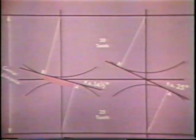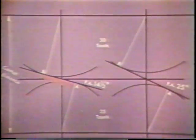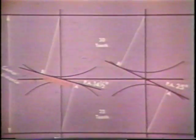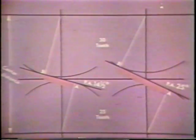Distance AB is the total length of the line of action, and as you can see, it becomes greater as the pressure angle is increased.